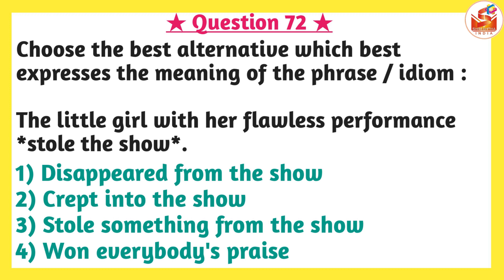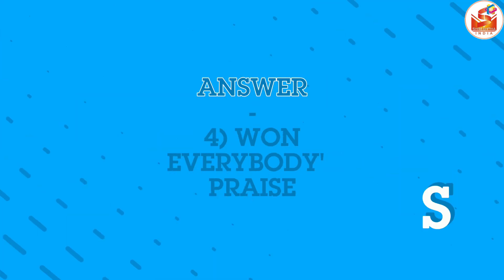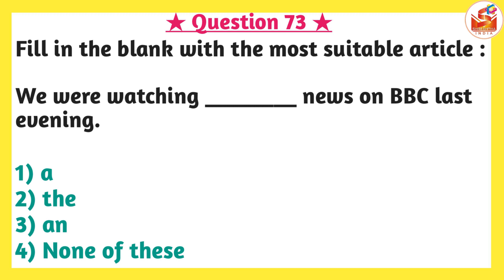Next question: which best expresses the meaning of the phrase or idiom? 'The little girl with her flawless performance stole the show.' The highlighted part is 'stole the show.' The sentence describes a little girl whose flawless performance captivated the audience. Options are: option one, disappeared from the show; option two, crept into the show; option three, stole something from the show; option four, won everybody's praise. Since her performance was flawless and she won everyone's admiration, option four — won everybody's praise — is the correct answer.